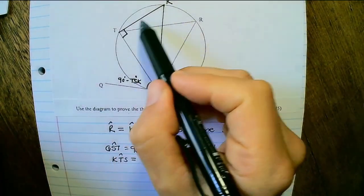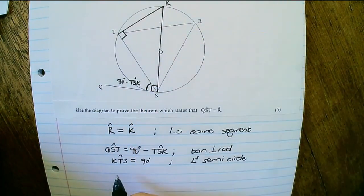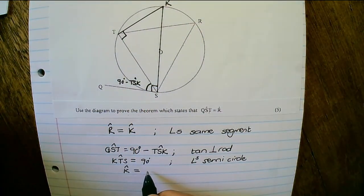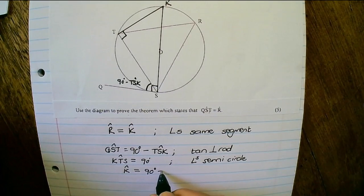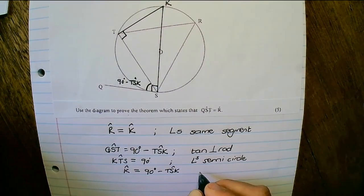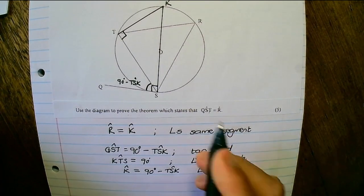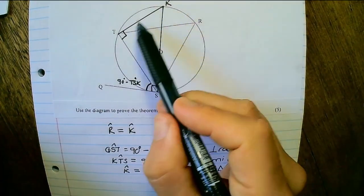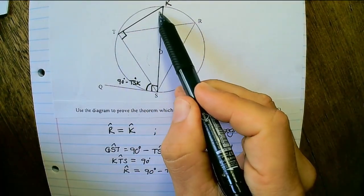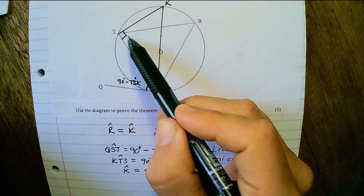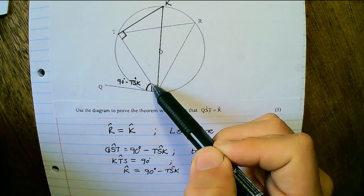And using this triangle, I can find angle K, which will be equals to 90 degrees minus TSK. So K would be 90 degrees minus TSK, 90 degrees minus this angle.